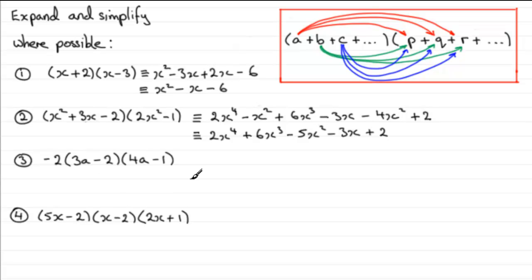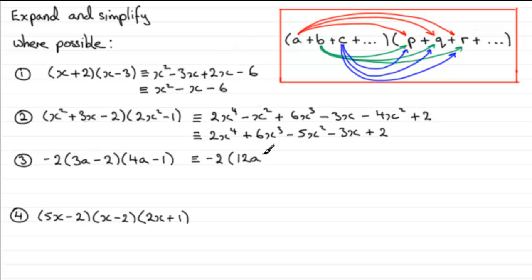With example 3 we've got three things being multiplied: minus 2, multiplied by (3A minus 2), multiplied by (4A minus 1). In situations like this, do the two brackets first and hold back on the minus 2. So we expand: 3A times 4A is 12A squared; 3A times minus 1 is minus 3A. Then minus 2 times 4A is minus 8A; and minus 2 times minus 1 is plus 2.